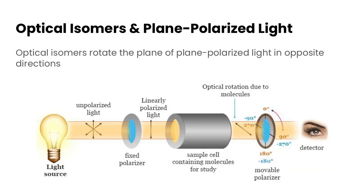One really unique property of optical isomers is that if you put them into something called a polarimeter, it will take plane polarized light and rotate it. Depending on which enantiomer we have, it might rotate the light to the left or to the right. So you're probably asking: what is a polarimeter, what is plane polarized light, and what is Dr. J talking about? Let's go over the basics.